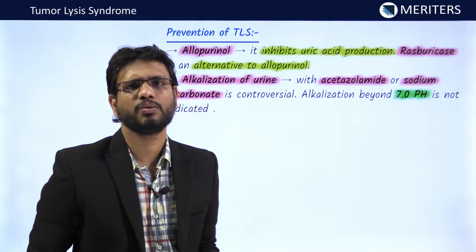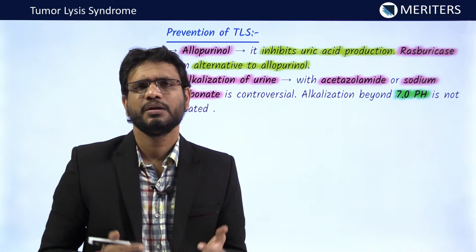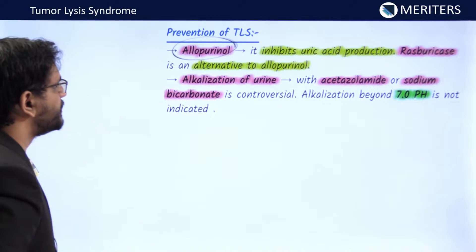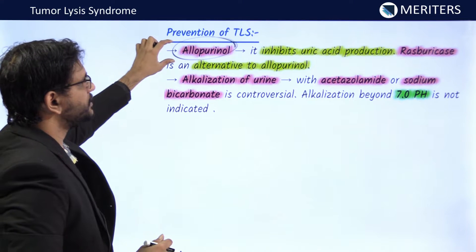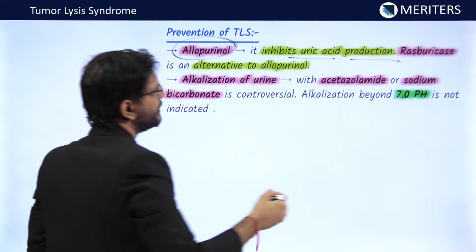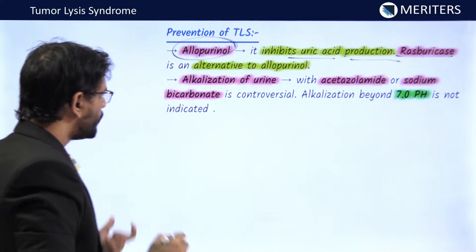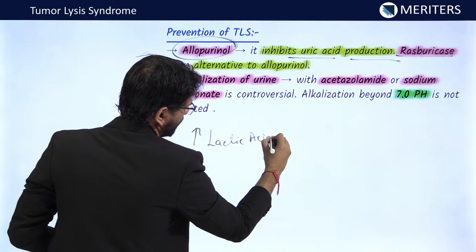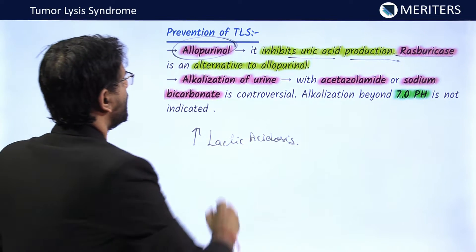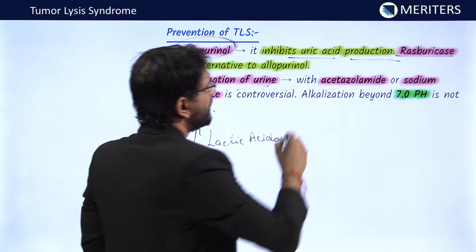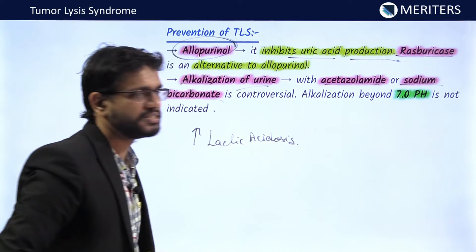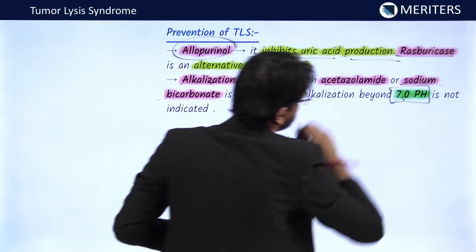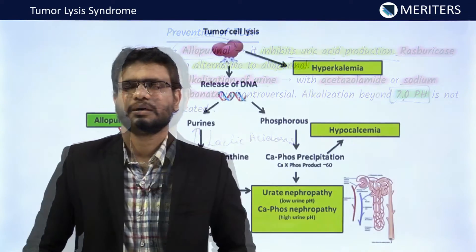For prevention of TLS, since uric acid is elevated, we can administer allopurinol to inhibit uric acid production. Alternatively, rasburicase can be used. Regarding lactic acidosis and metabolic acidosis, alkalization of urine using acetazolamide or sodium bicarbonate is controversial. However, alkalization beyond pH 7 is not indicated in TLS.